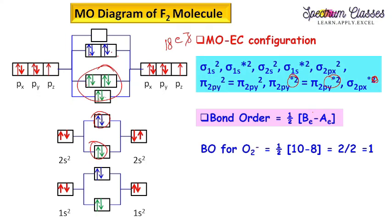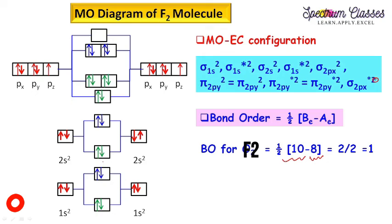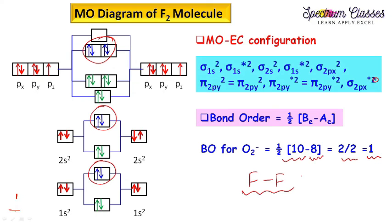Calculating bond order for F2: electrons in bonding MOs are 10; electrons in antibonding MOs are 8. Bond order equals 10 minus 8 divided by 2 equals 1. This suggests F2 has a single bond F–F. For magnetic character: all electrons are paired, therefore F2 is diamagnetic in nature. In this way, you can calculate molecular orbital diagrams for other diatomic molecules as well.